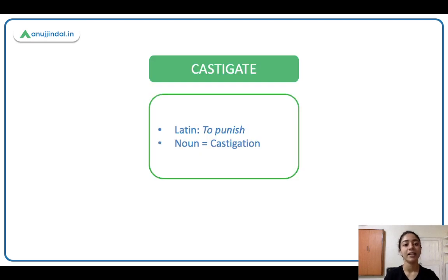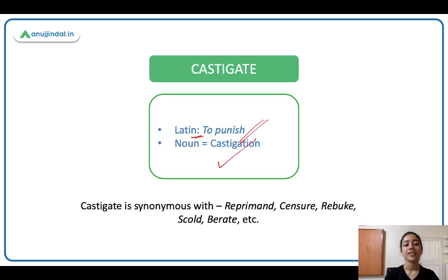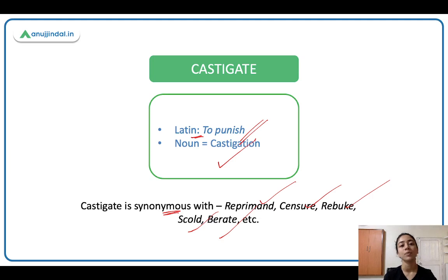Castigate comes from Latin, which means to punish. The noun is castigation. Castigate is synonymous with reprimand, censure, rebuke, scold, berate — yeh sab castigate ke synonyms hain, similar hain. Inke meanings same hain: to punish, to scold, to lecture, to criticize.